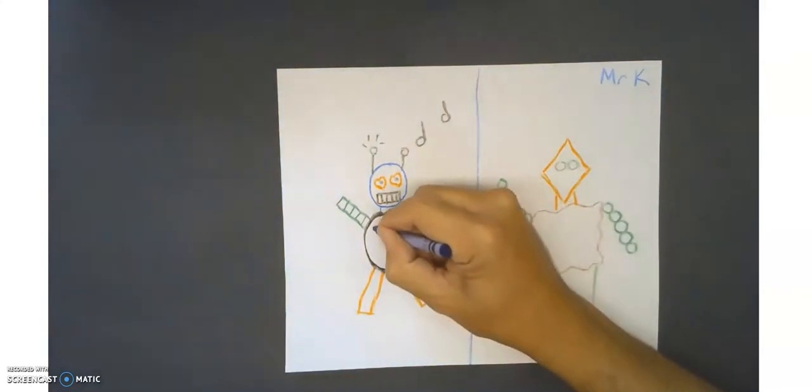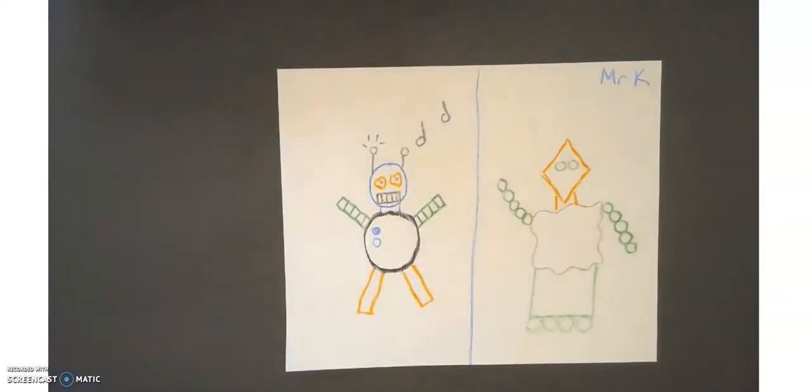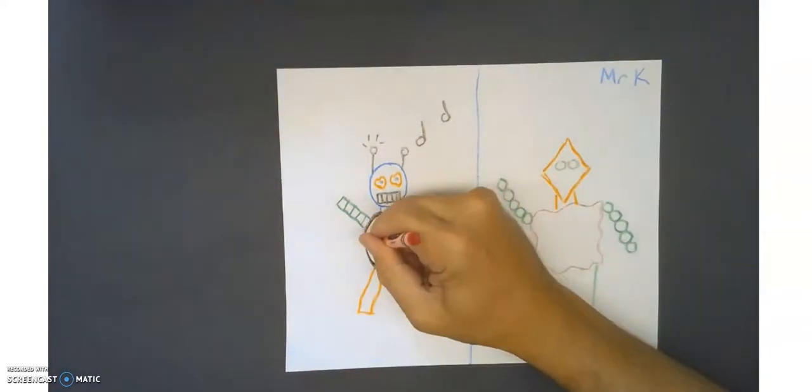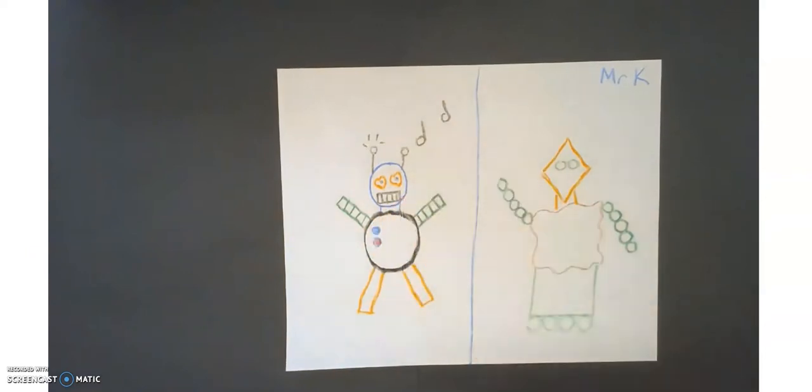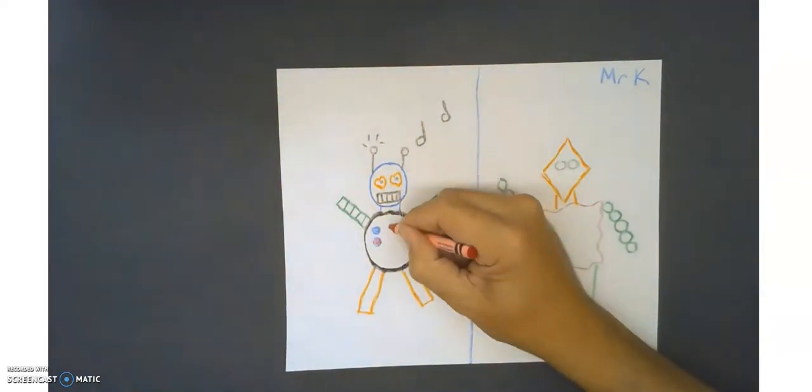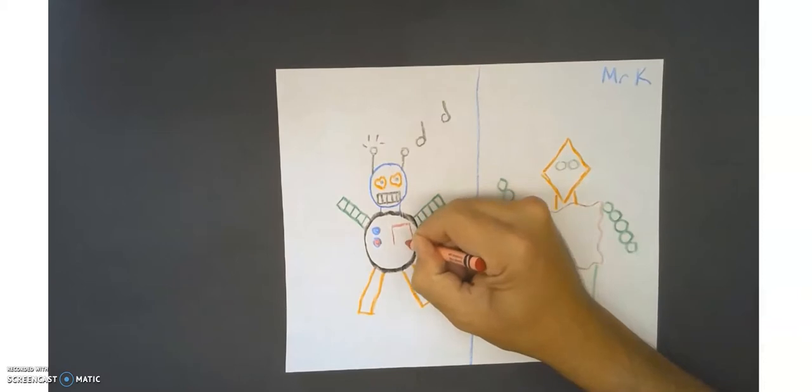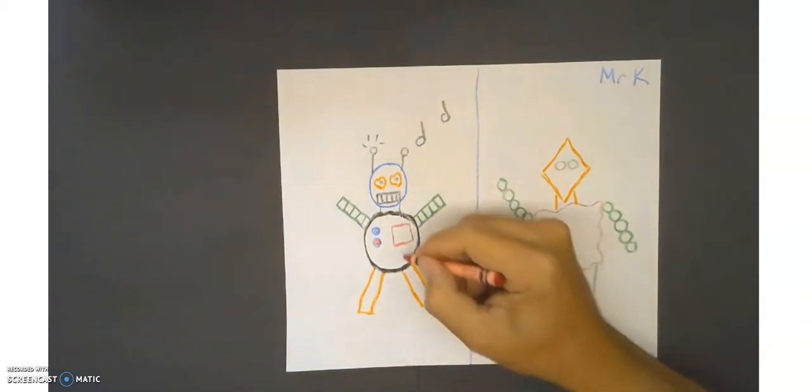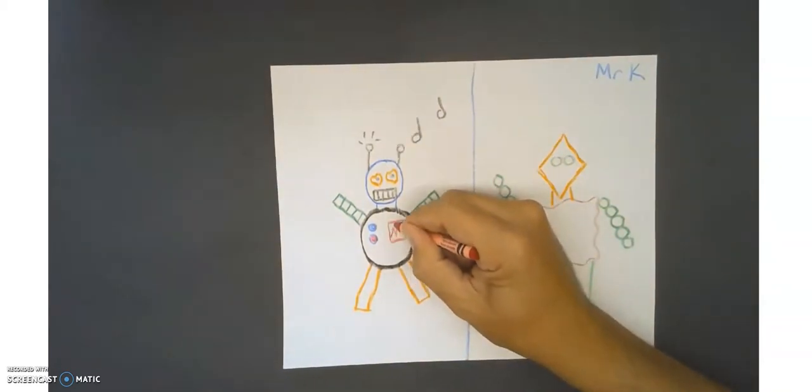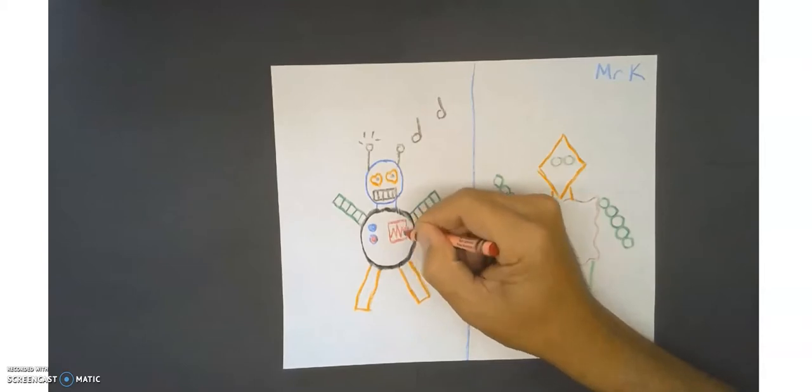I can add buttons and other features in the middle of my robot. These circle buttons I will fill in with color. I can even add a screen in the middle. This screen I'm going to have showing the heartbeat of my robot, zigzag lines. Zigzags look like mountains.